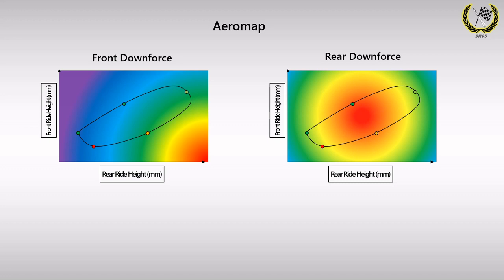When we observe the downforce distribution for front and rear, we can understand force values at different points and know whether the car will be front or rear biased at different points in the corner. In sim racing games you might not have access to this aero map information as it is confidential. However, understanding this visually will make your driving more intuitive and will help when further setting up your mechanical balance for the car.